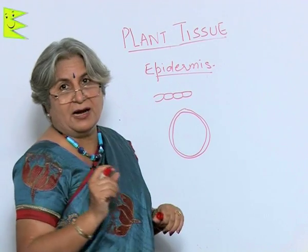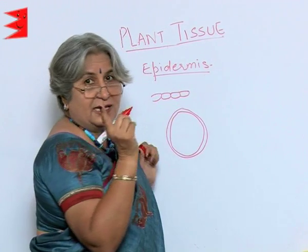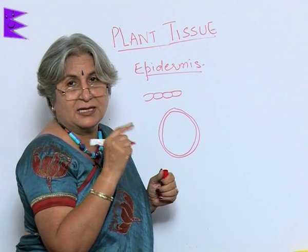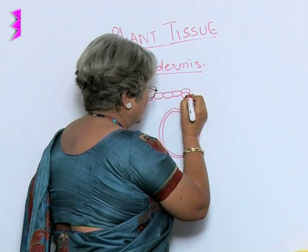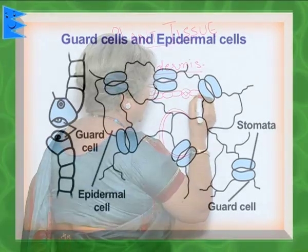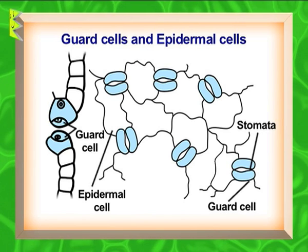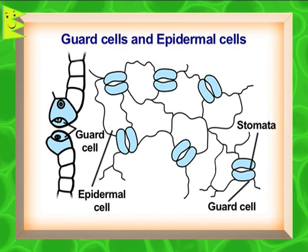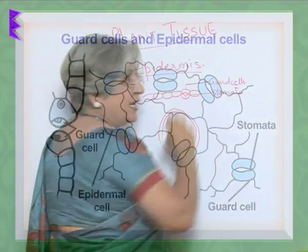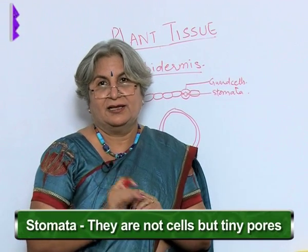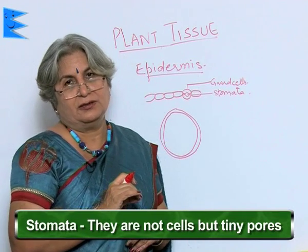However, in the case of leaves, this continuity is broken by tiny pores which are called stomata. The stomata are surrounded by kidney-shaped guard cells. To clarify, the stomata are not the guard cells themselves — the stomata are only the tiny pores, and the guard cells are the cells which surround them.